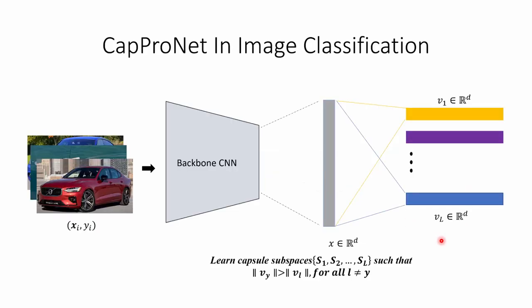Now let's see how a CapProNet model architecture looks in general. We have labeled training data where x is the sample and y is the corresponding target. We pass samples through a backbone CNN architecture and get a feature vector x, which is a d-dimensional vector. Then we learn a group of capsule subspaces S1 to SL such that the norm of the capsule vector corresponding to the target class is larger than all other classes.